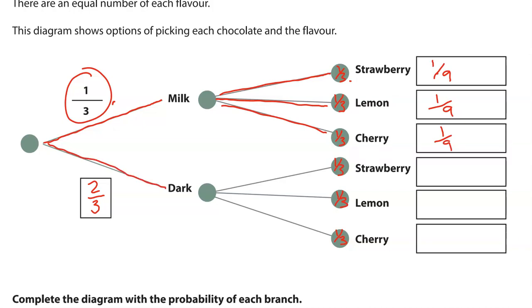Strawberry covered in dark chocolate, that is 2 thirds times 1 third. 2 times 1, that is 2. 3 times 3, that is 9. Dark and lemon, again, that is 2 ninths. And cherry and dark, that is 2 ninths as well. They should all add up to 9, so 1, 2, 3, 5, 7, 9. 9 ninths or a whole.